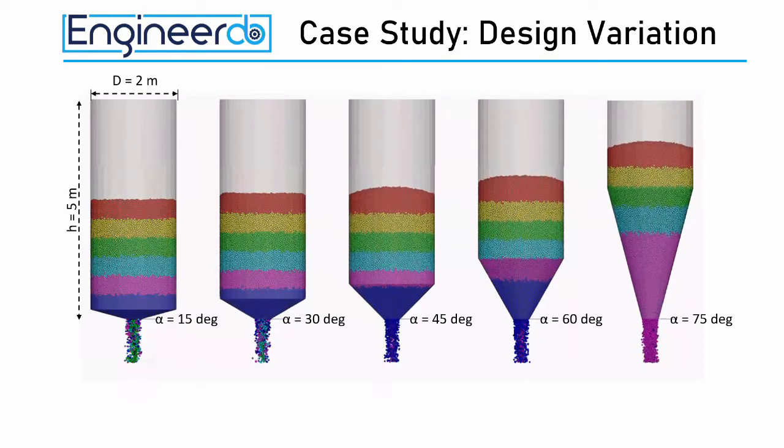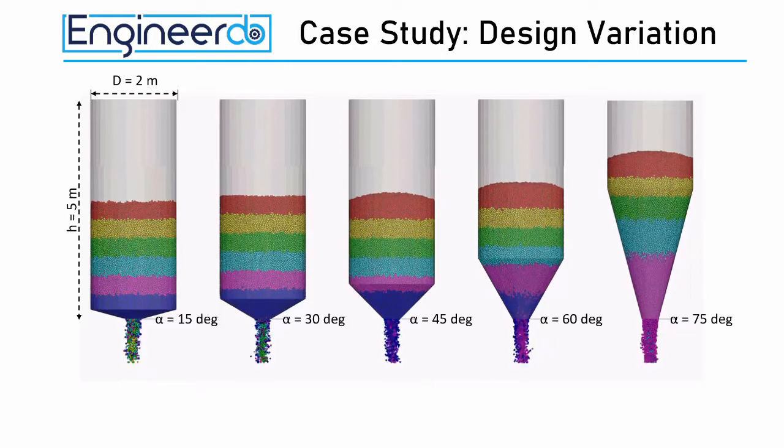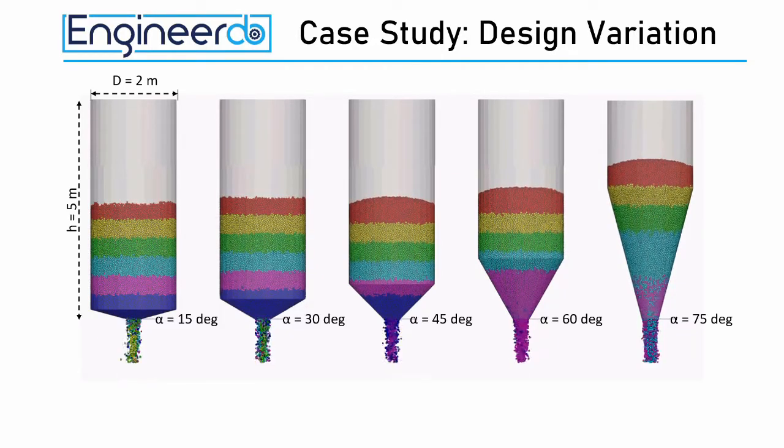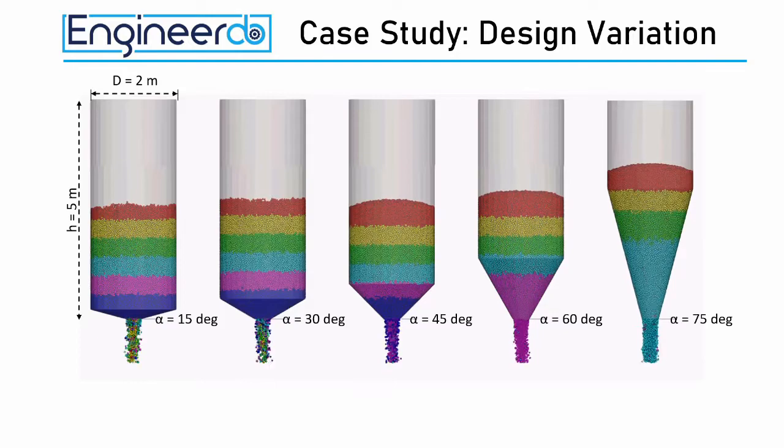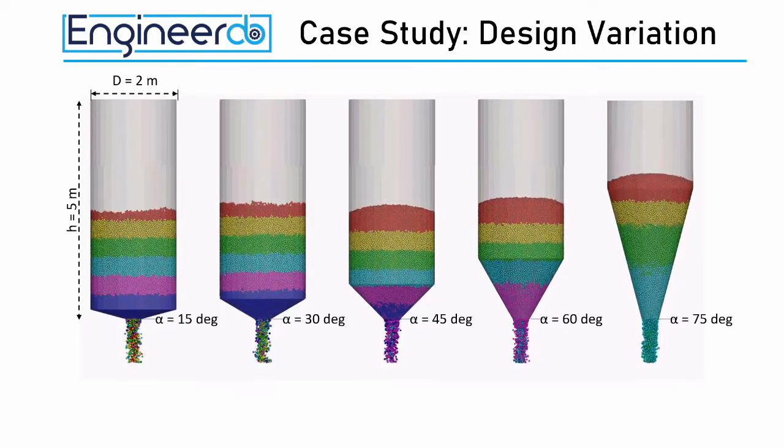On the left side we can see a high degree of mixing, indicated by the different colors of the particle in the outflowing stream. Also we can see that the silos on the left side are discharged from the top, whereby the red particle layer disappears first.